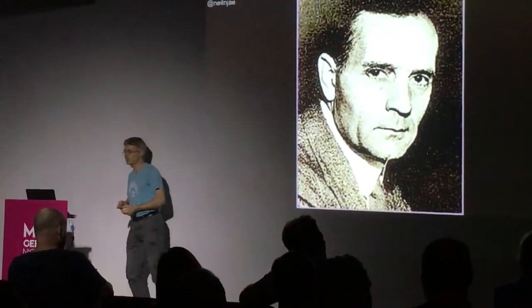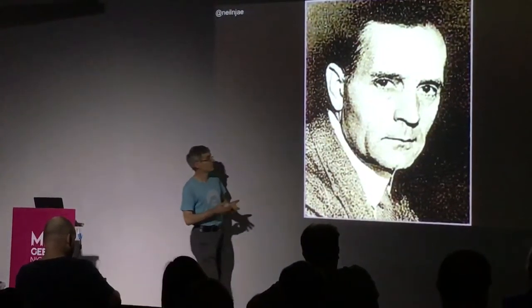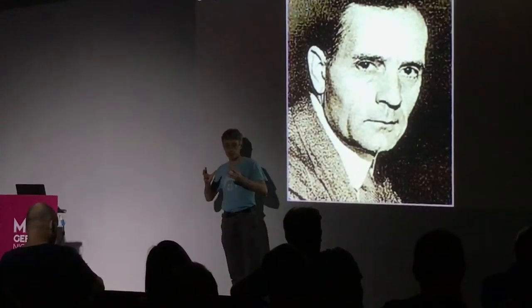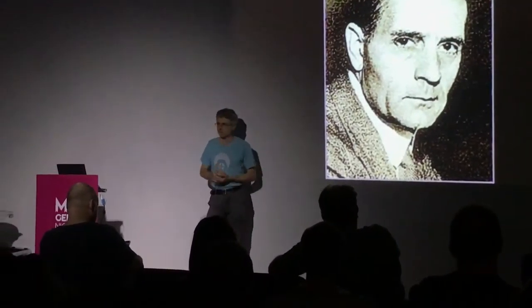1929, this guy turns up, Edwin Hubble. He invented a couple of things, or discovered a couple of things. One is that the universe is actually quite a bit bigger than just our galaxy. And he also came, actually, was able to prove general relativity. So the good news is the universe is not static. The bad news is it's expanding.